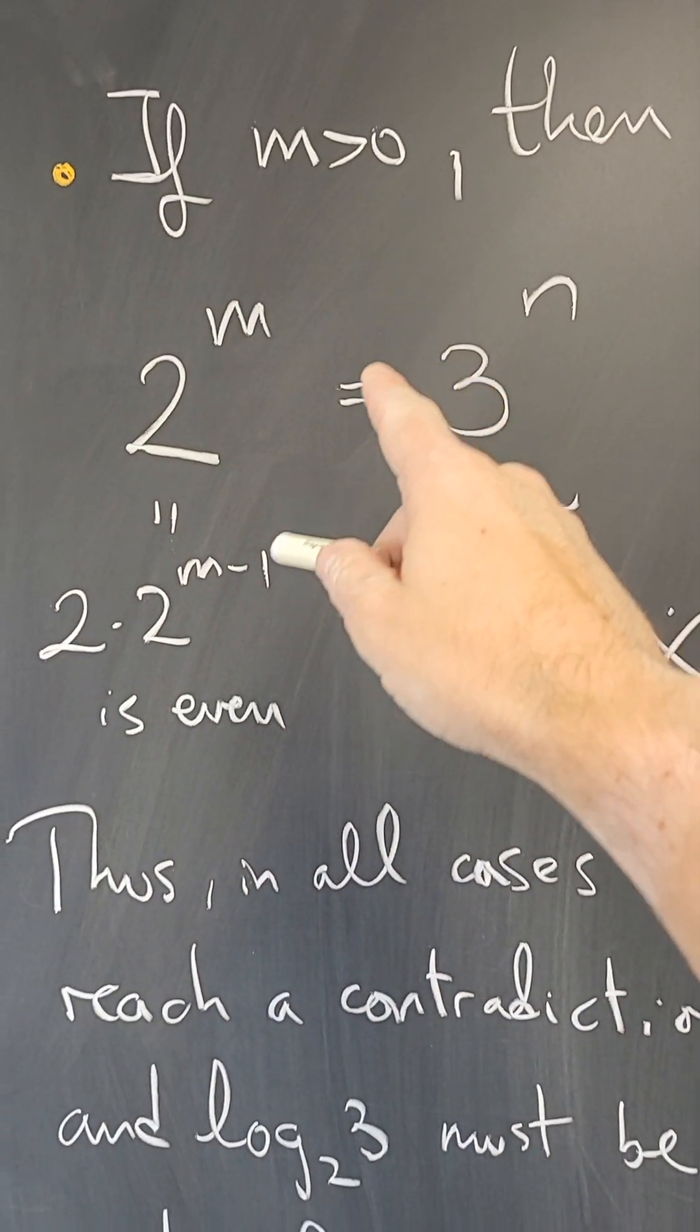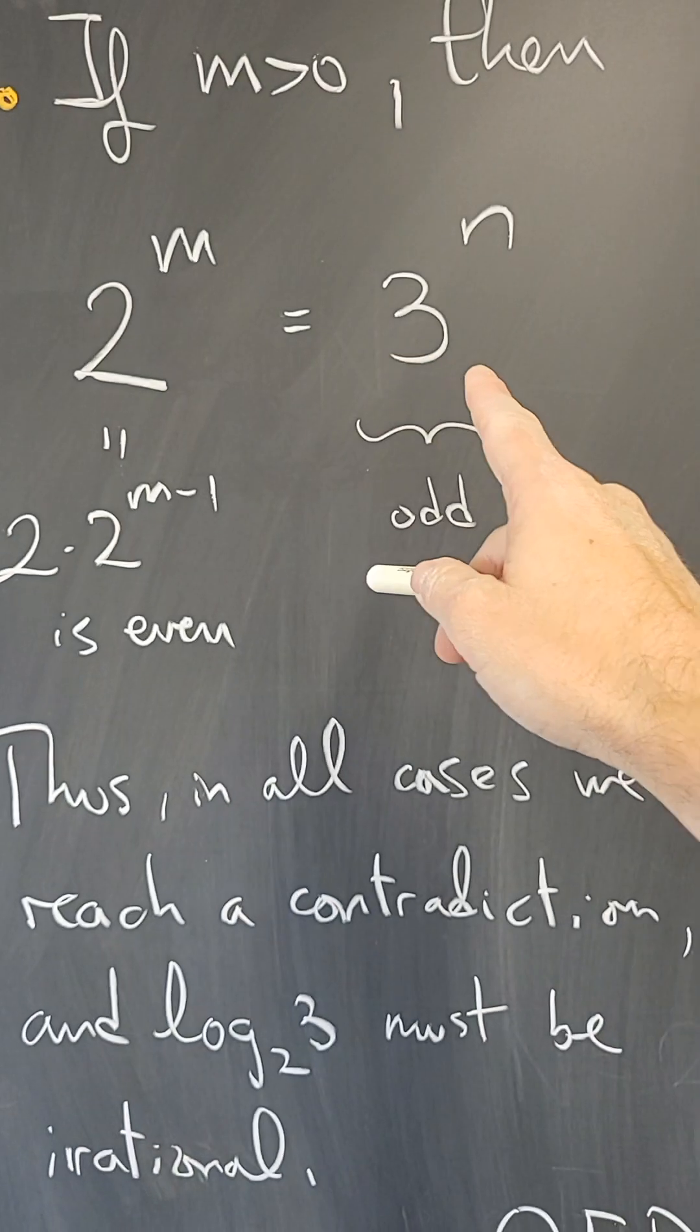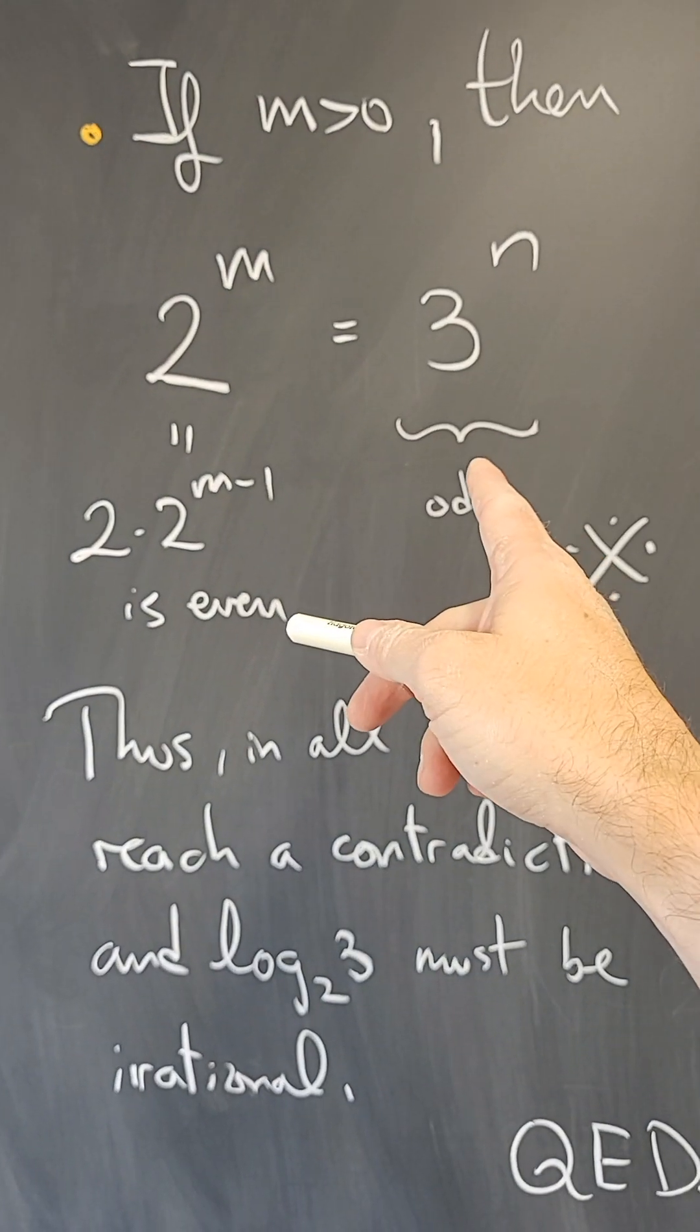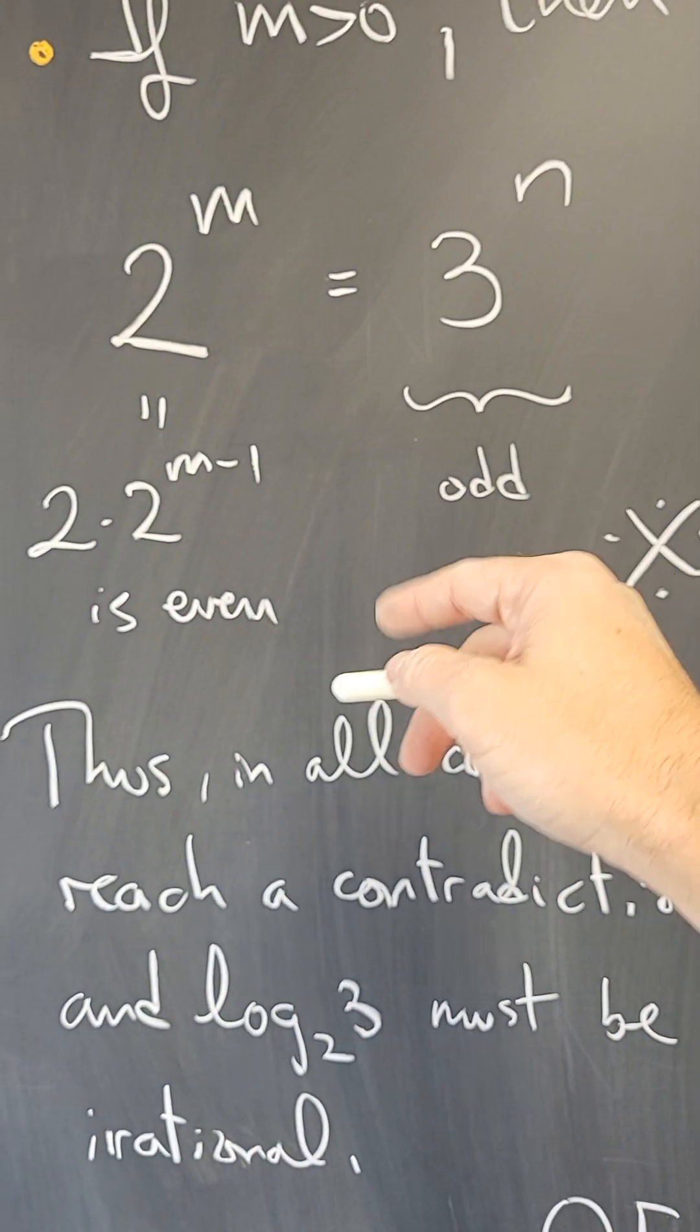Finally, if m is positive, then 2^m and 3^n are both integers, but 2^m is even and 3^n is odd.